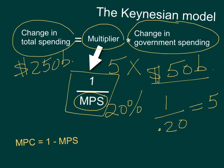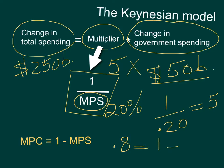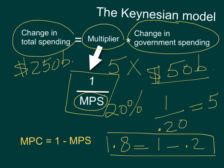The relationship between the MPC and the MPS is that the MPC is 1 minus the MPS. So if the MPC is 0.8, then you know that the MPS is 0.2. The MPS is also 1 minus the MPC. So the two of them, MPC and MPS, have to add up to 1.